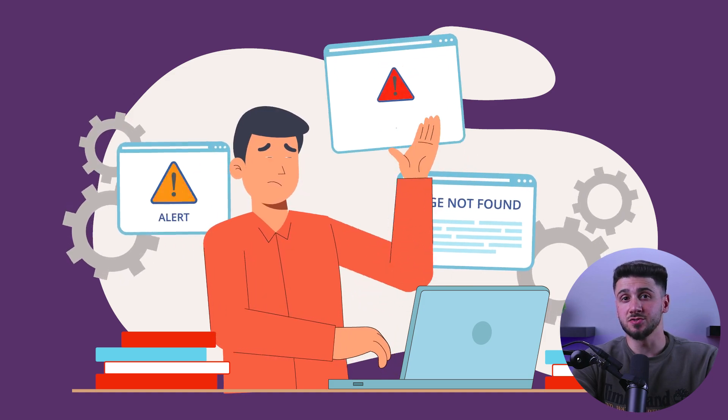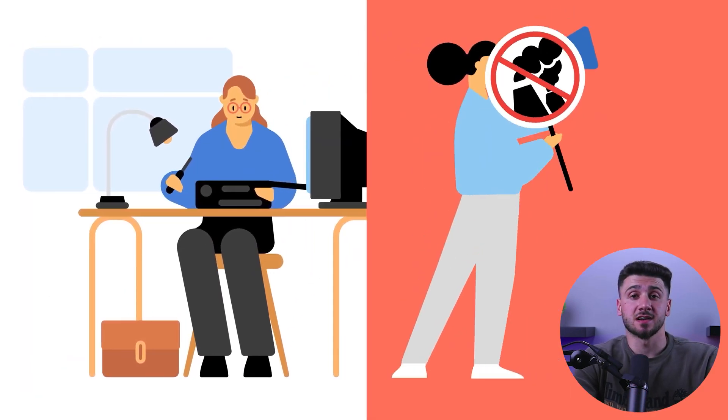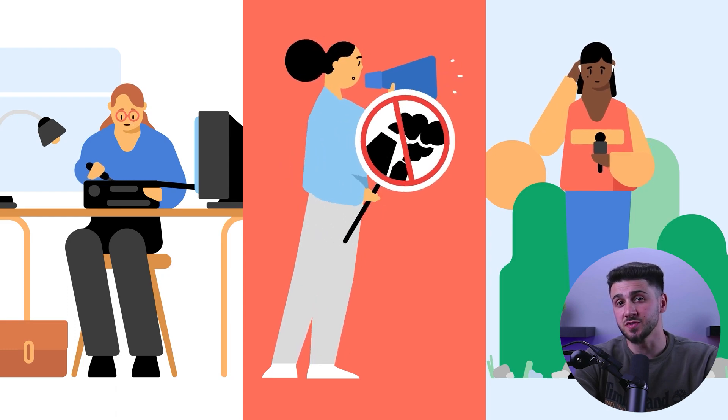It's also worth noting that while the dark web is often portrayed in the media as a seedy underworld of illegal activities, it's important to remember that not all Onion Links are associated with illicit behavior. Some Onion Links lead to legitimate websites not indexed by traditional search engines. For example, there are forums for discussing politics, human rights, and social issues hosted on the dark web, as well as Onion marketplaces that sell legal goods and services like books, artwork, and even web hosting. However, even if a website appears to be legal, it may still pose a risk to your privacy and security, so always be cautious and do your research before accessing any Onion Links.